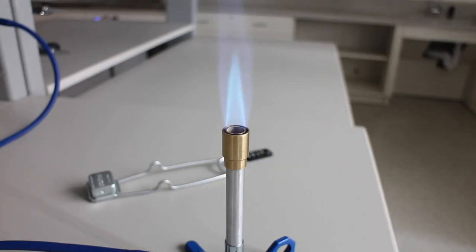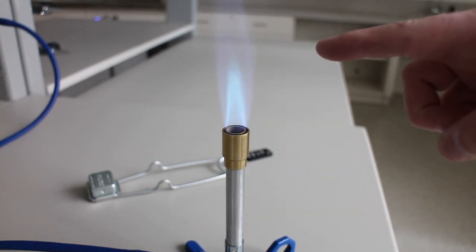For many applications, you'll want a double blue cone. Notice the outer blue cone and then the inner blue cone. It's the tip of the inner blue cone that is the hottest part of the flame.